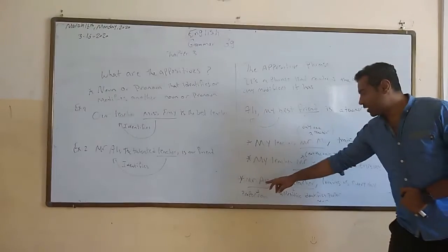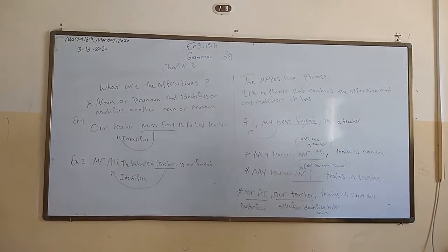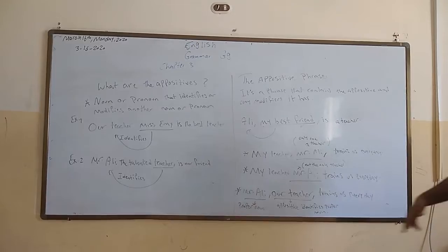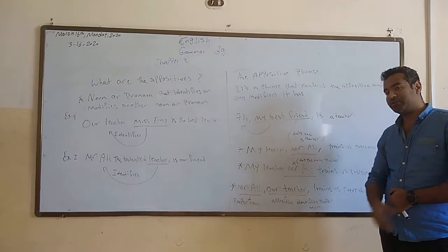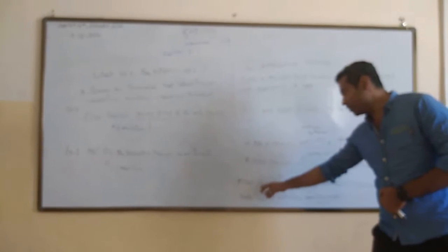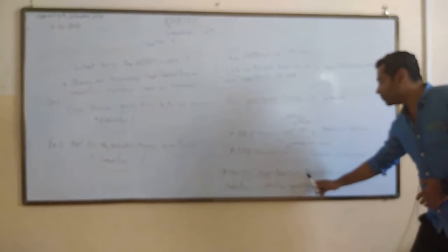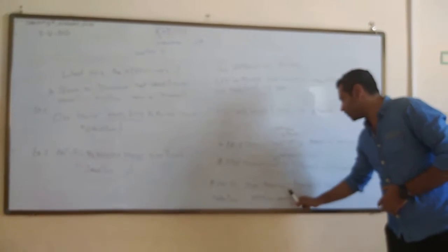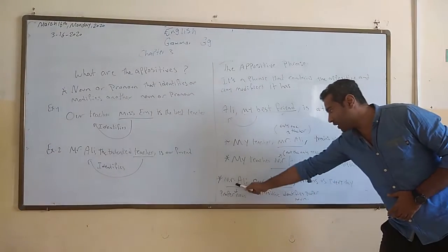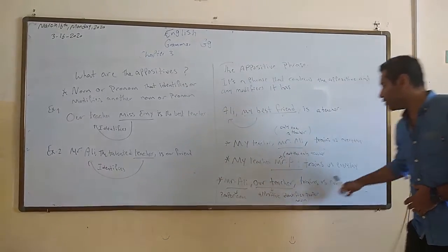The last rule: 'Misrani, our teacher, trains us every day.' Here the appositive is 'our teacher.' 'Our teacher' identifies Misrani. Misrani is a proper noun. Any appositive that identifies a proper noun must be set off by two commas. That's why here 'Misrani, our teacher,' has two commas. So any appositive identifying a proper noun like Misrani must be set off with two commas.